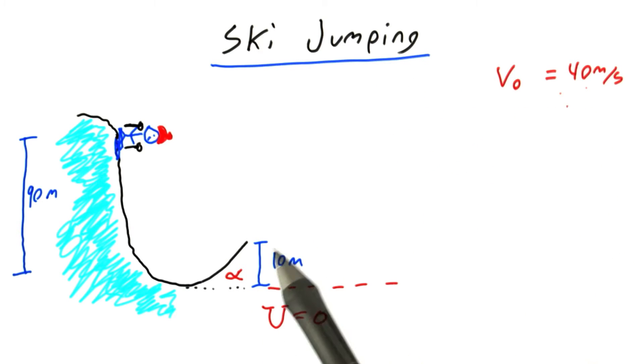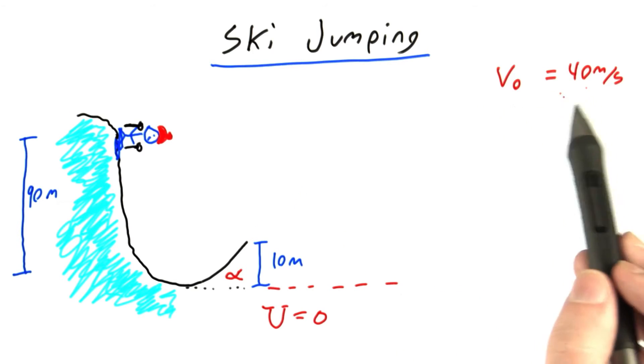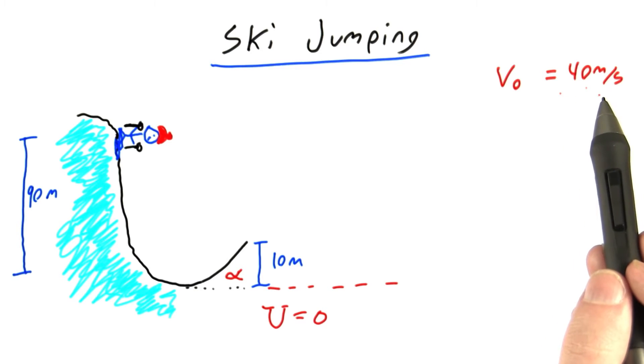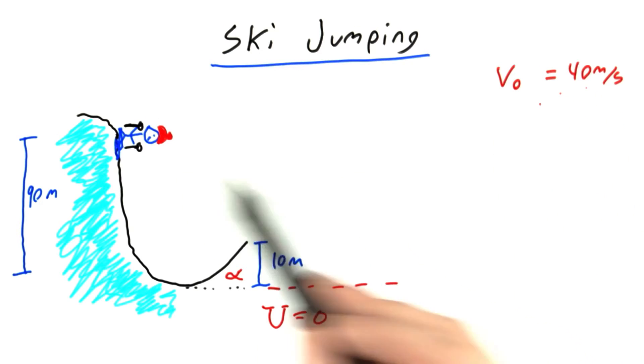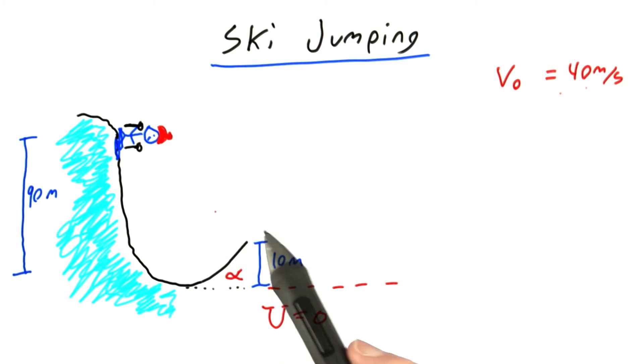Now that I know the speed of the skier at the tip of the ramp, I can calculate using kinematics how far away from the ramp he will land. Note that in the previous part, 40 meters per second was what we called the final speed. It was the skier's speed at the end of the first part, when he was just on the tip of the ramp.